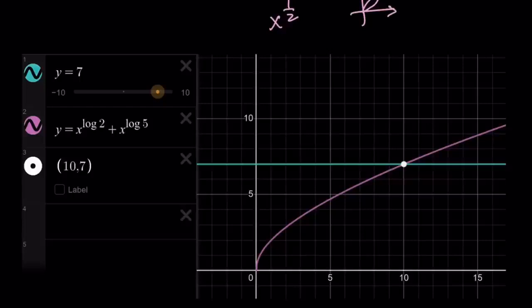The same thing goes here. The shape is kind of like a radical function. But log 2 is not rational like 1 half. It is irrational and it's also less than 1. If the power is greater than 1, you get something that looks like a parabola. But if it's less than 1, we get this shape. These two intersect at 10 comma 7, which means x equals 10 is the solution.